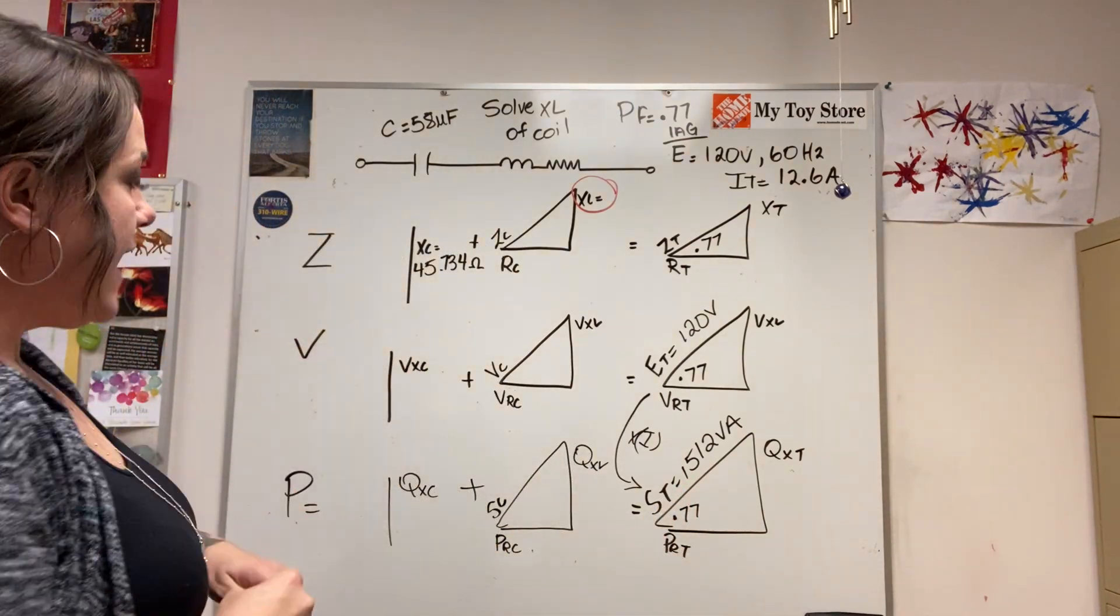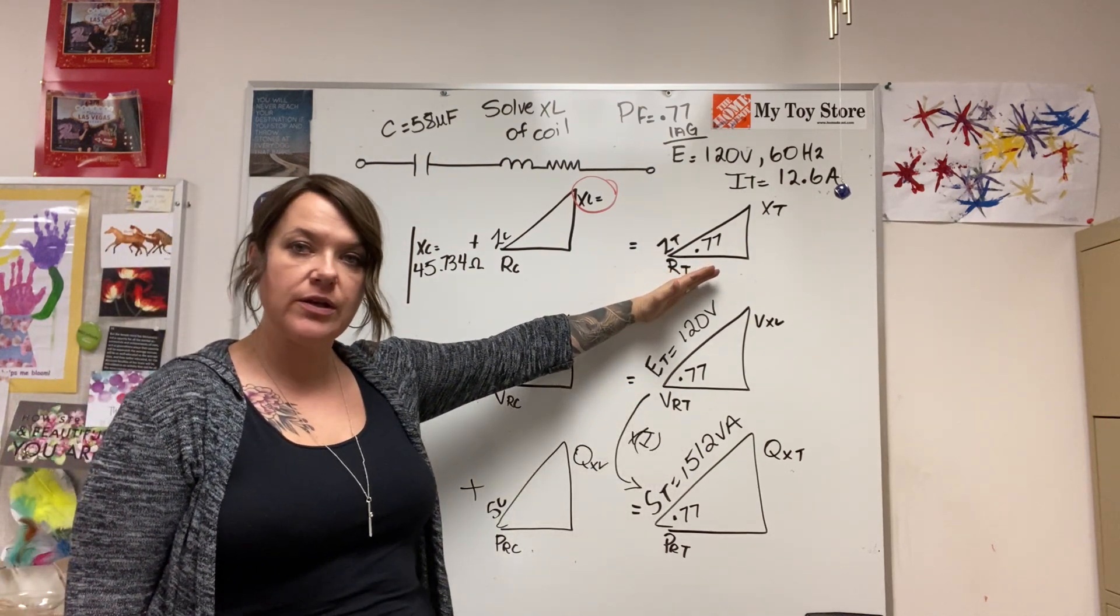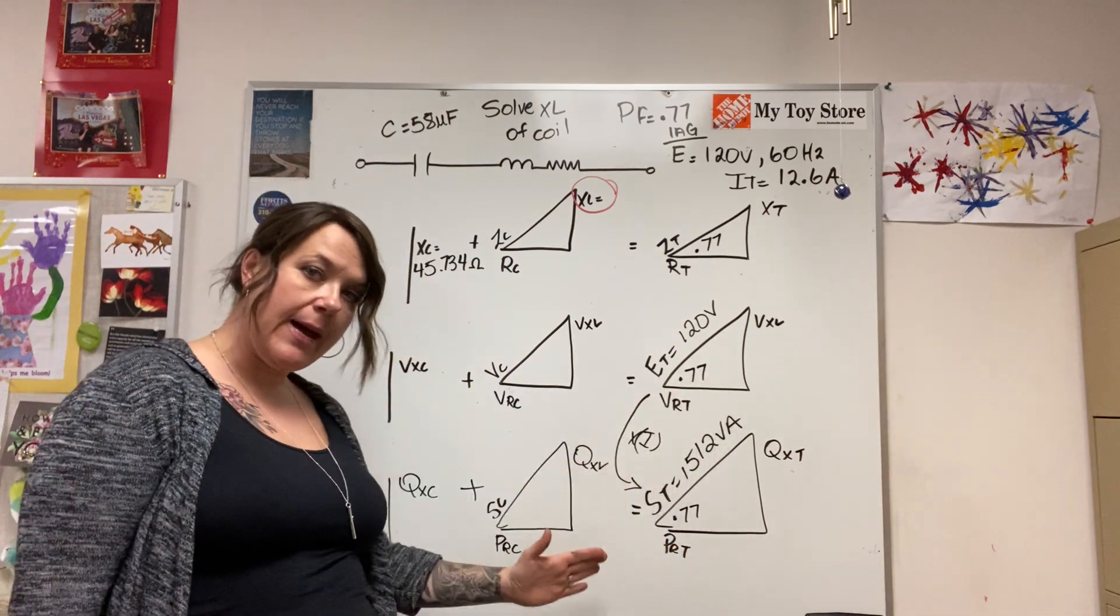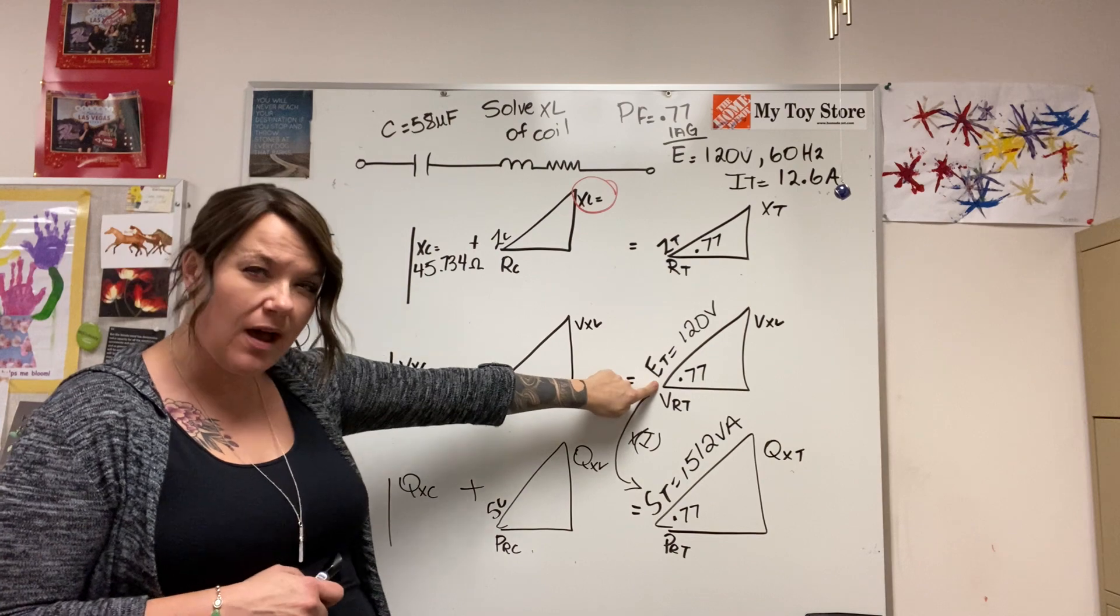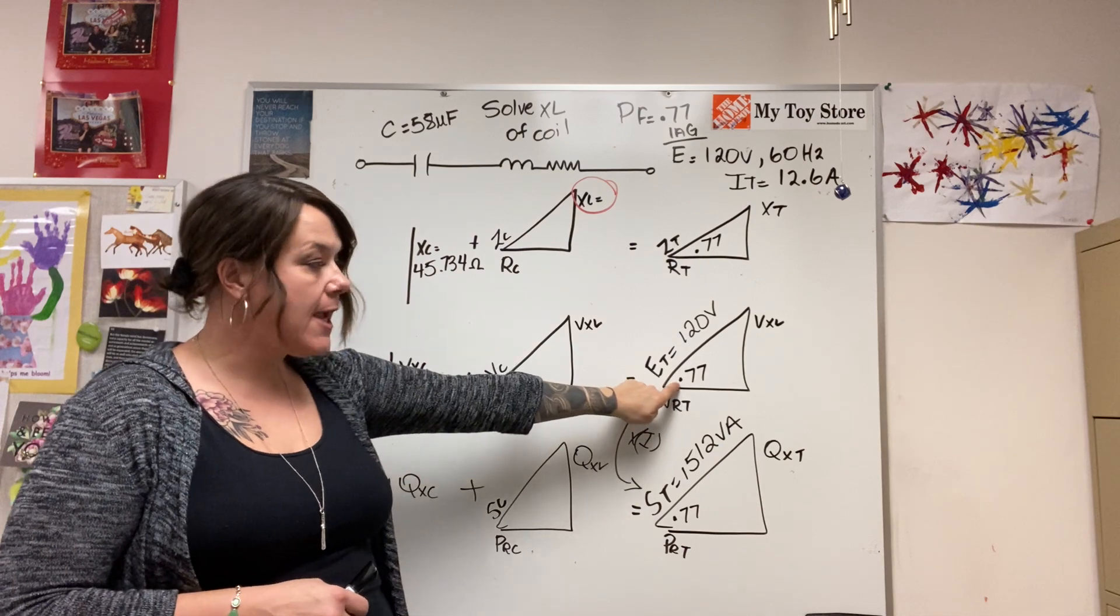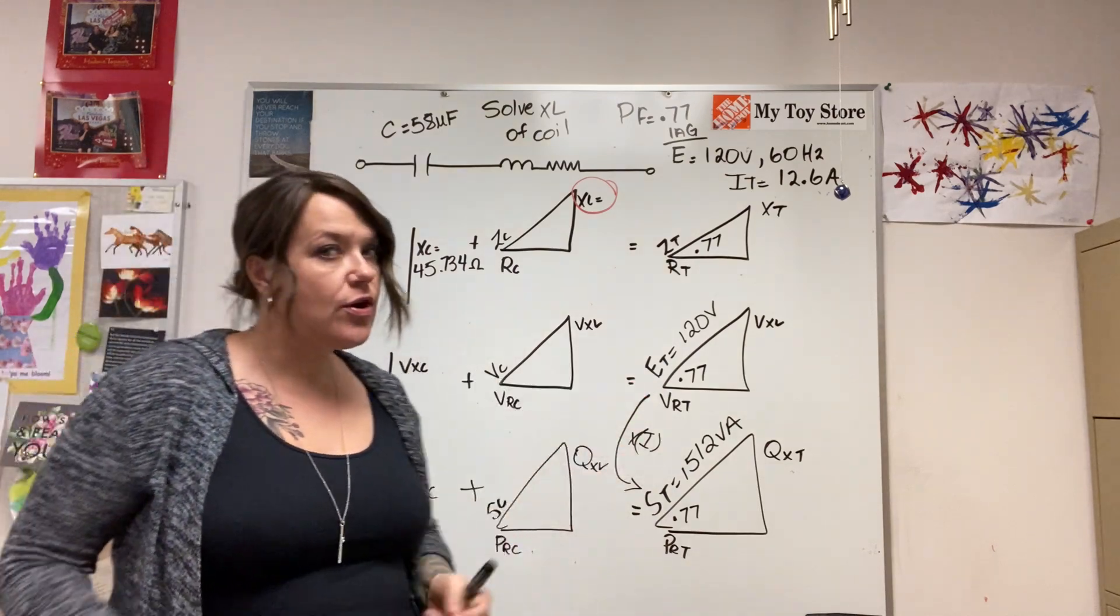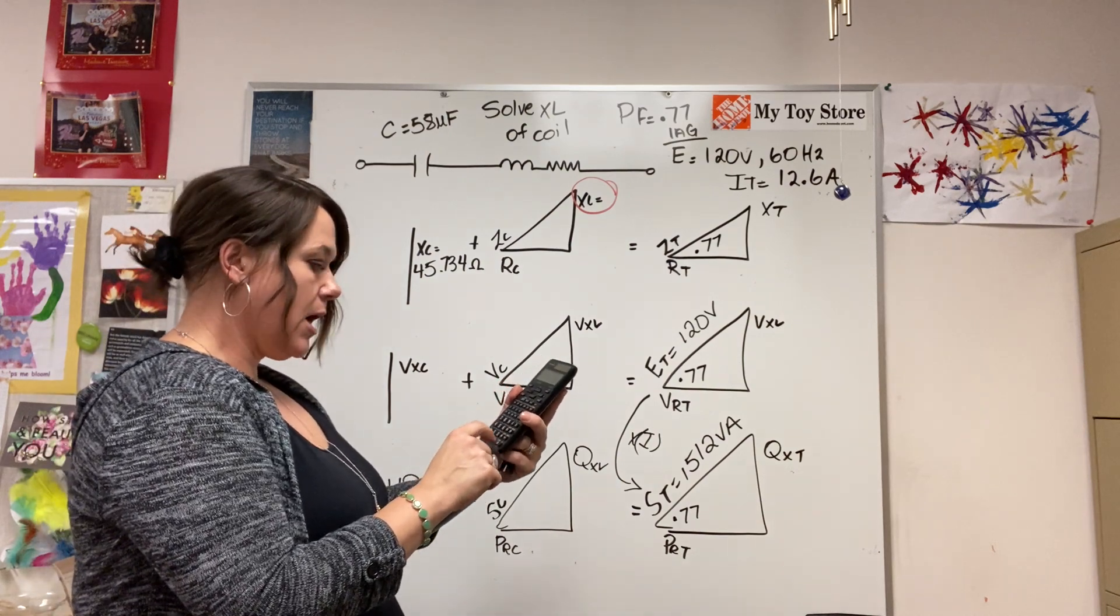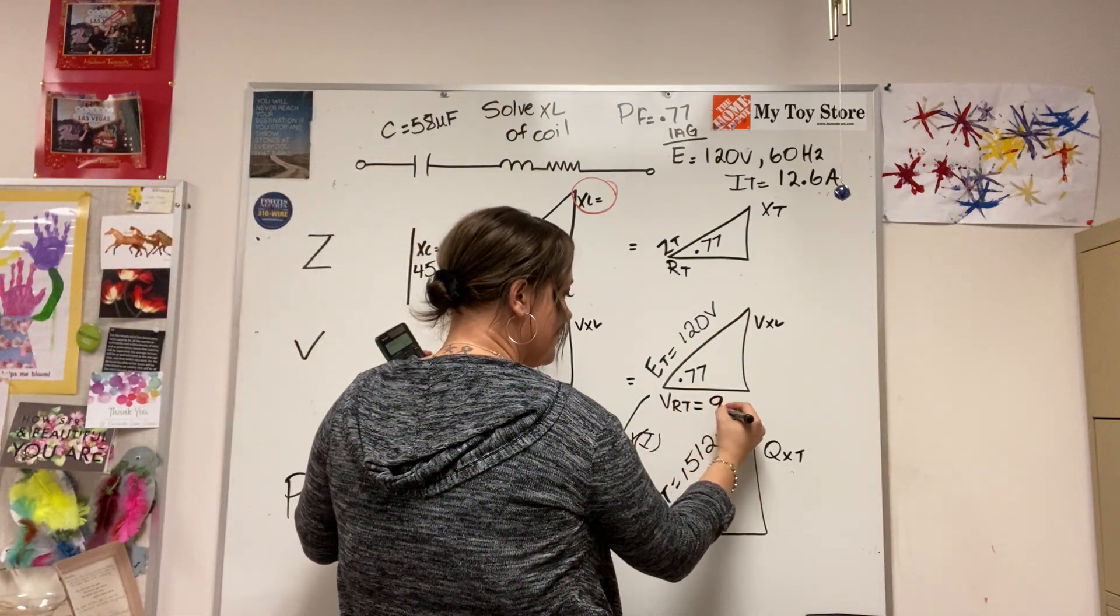I can figure out what the volt drop is across the resistive portion, being that I have the hypotenuse of this triangle. I can also figure out what the power is because I have the apparent power. So a mistake that everyone seems to be making is that they'll go 120 times the cosine of 0.77, and that isn't accurate. You want to go 120 volts times 0.77, and that will give you your VRT. And if you get a higher number than your hypotenuse, you've probably punched something incorrectly into your calculator. So 120 times 0.77 equals 92.4 volts.